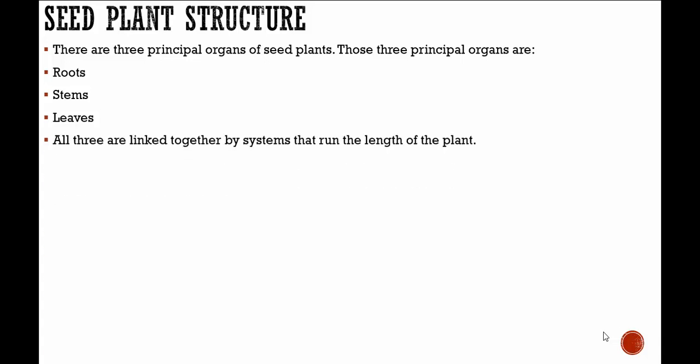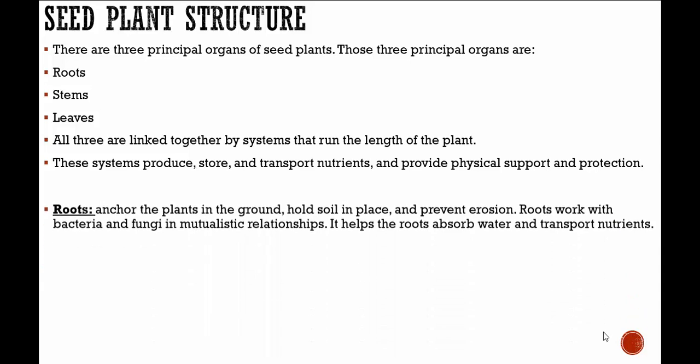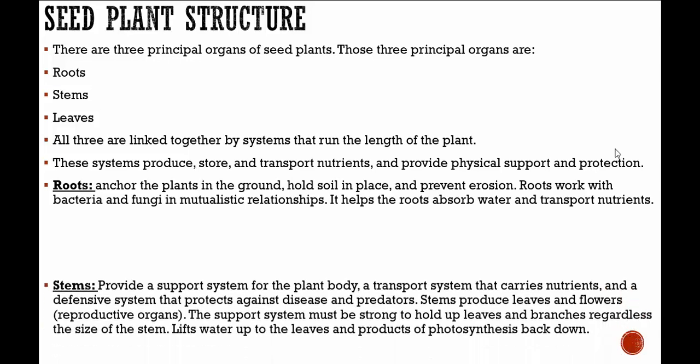All three are linked together by systems that run the entire length of the plant. These systems produce, store, and transport nutrients and provide physical support and protection. The roots anchor the plants into the ground, hold the soil in place, and prevent erosion. Roots work with bacteria and fungi in mutualistic relationships, meaning they work together helping one another, which helps the roots absorb water and transport nutrients.